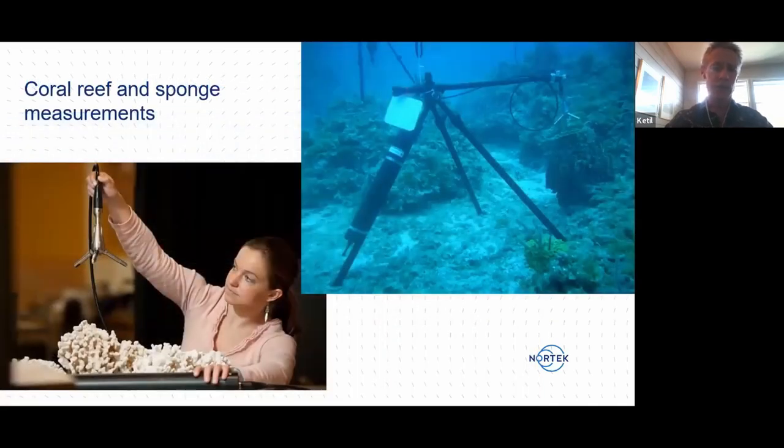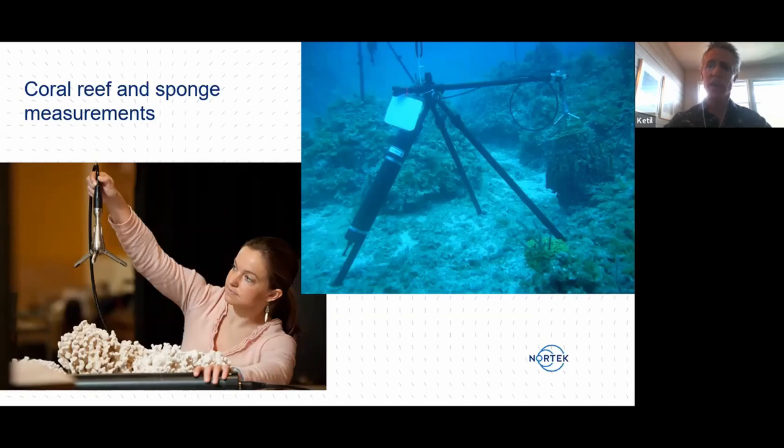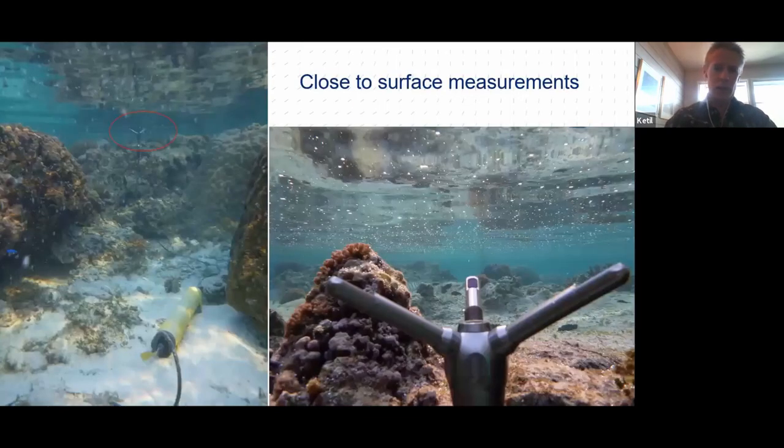Another area where the vector is used quite frequently is in conjunction with coral reefs. So this scientist here is showing how measurements are done very close to a coral. Again, to be able to measure currents so close to these substrates or to these structures, it's very difficult if you use something else with a larger sampling volume. You also have here an example of a vector mounted with measurements inside of a sponge. These sponges live from filtering water and with the vector it's possible to measure the flow speed in and out of the sponge.